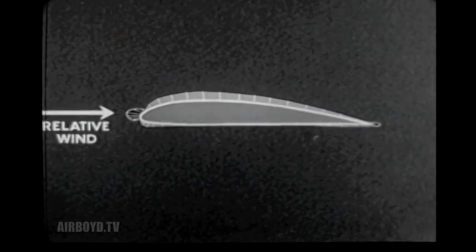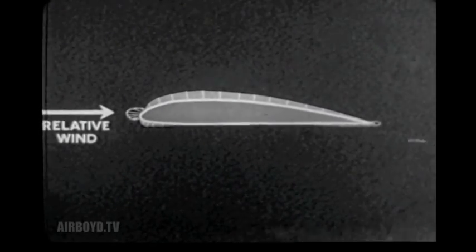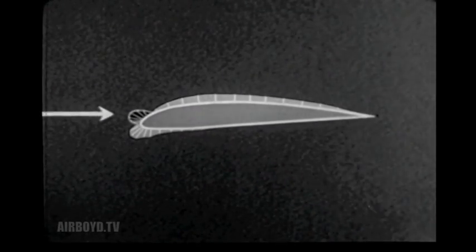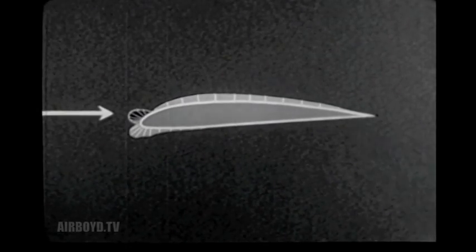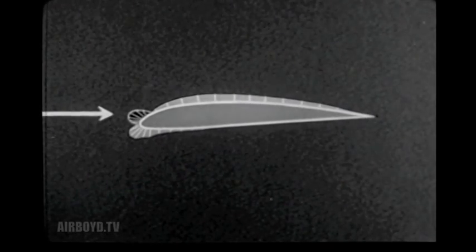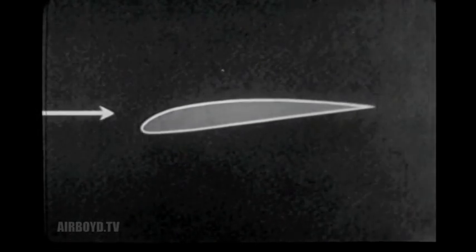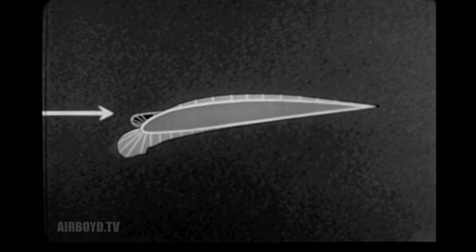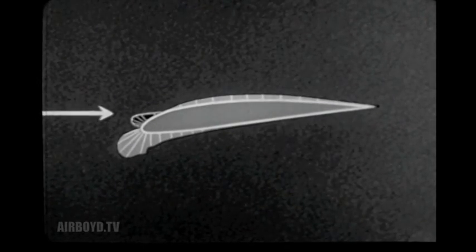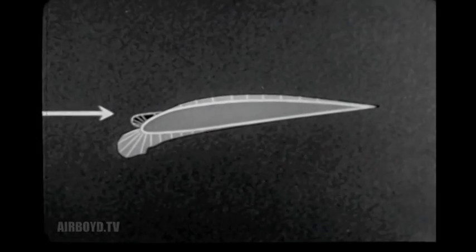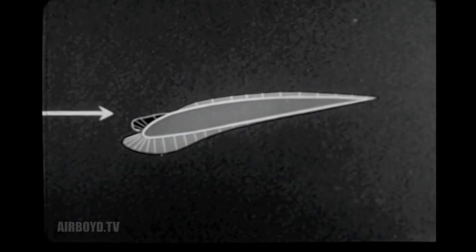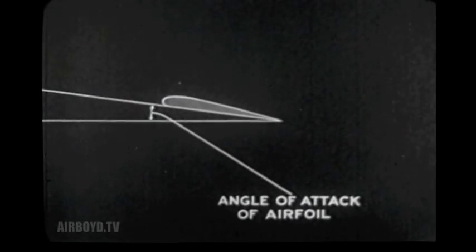Now let us see what happens to pressure values and distribution at negative angles of attack. From zero degrees, the angle is decreased to a slight negative value. The positive pressure bulb on the leading edge is practically unchanged. The negative pressure on the upper surface of the wing shows little change. However, the negative pressures along the lower surface begin to increase at the leading edge, and further increases in this area, accompanied by very slight changes in the positive pressure bulb, are the only differences which are readily observable as the angle of attack is further decreased.